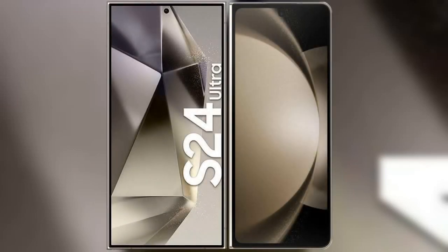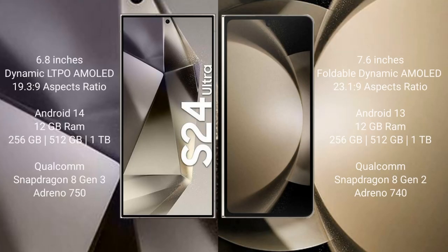I will compare the new Samsung Galaxy S24 Ultra with Samsung Galaxy Z Fold 5. The Samsung Galaxy S24 Ultra comes with a 6.8-inch Dynamic LTPO AMOLED display, while the Samsung Galaxy Z Fold 5 features a 7.6-inch foldable Dynamic AMOLED display.